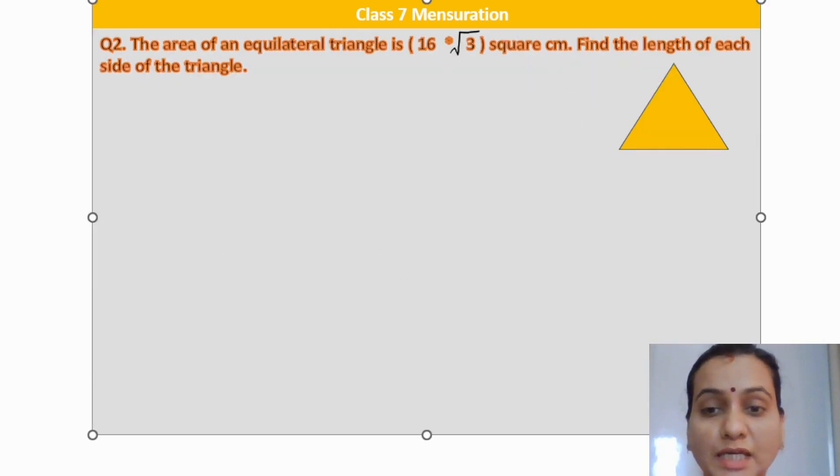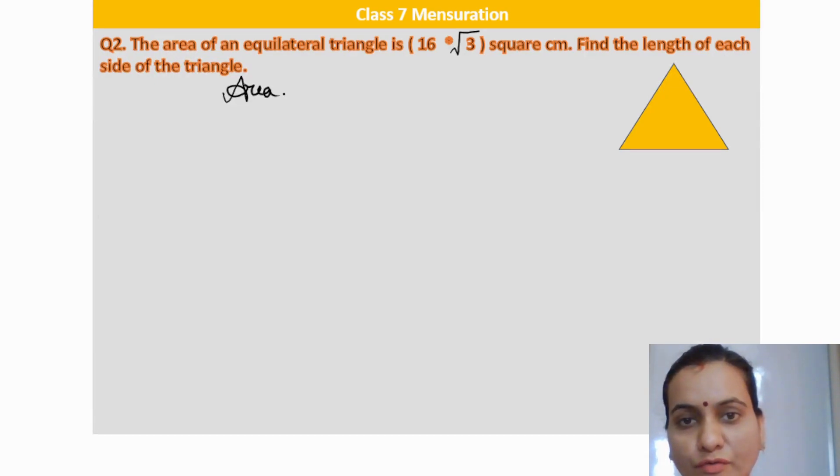Now let us take this question from equilateral triangle. The area of an equilateral triangle is 16 into root 3 square centimeter. Find the length of each side of the triangle. If you want to watch the conceptual videos based on rectangle, square, parallelogram and other shapes, then you can see in the description, I have attached the entire playlist.